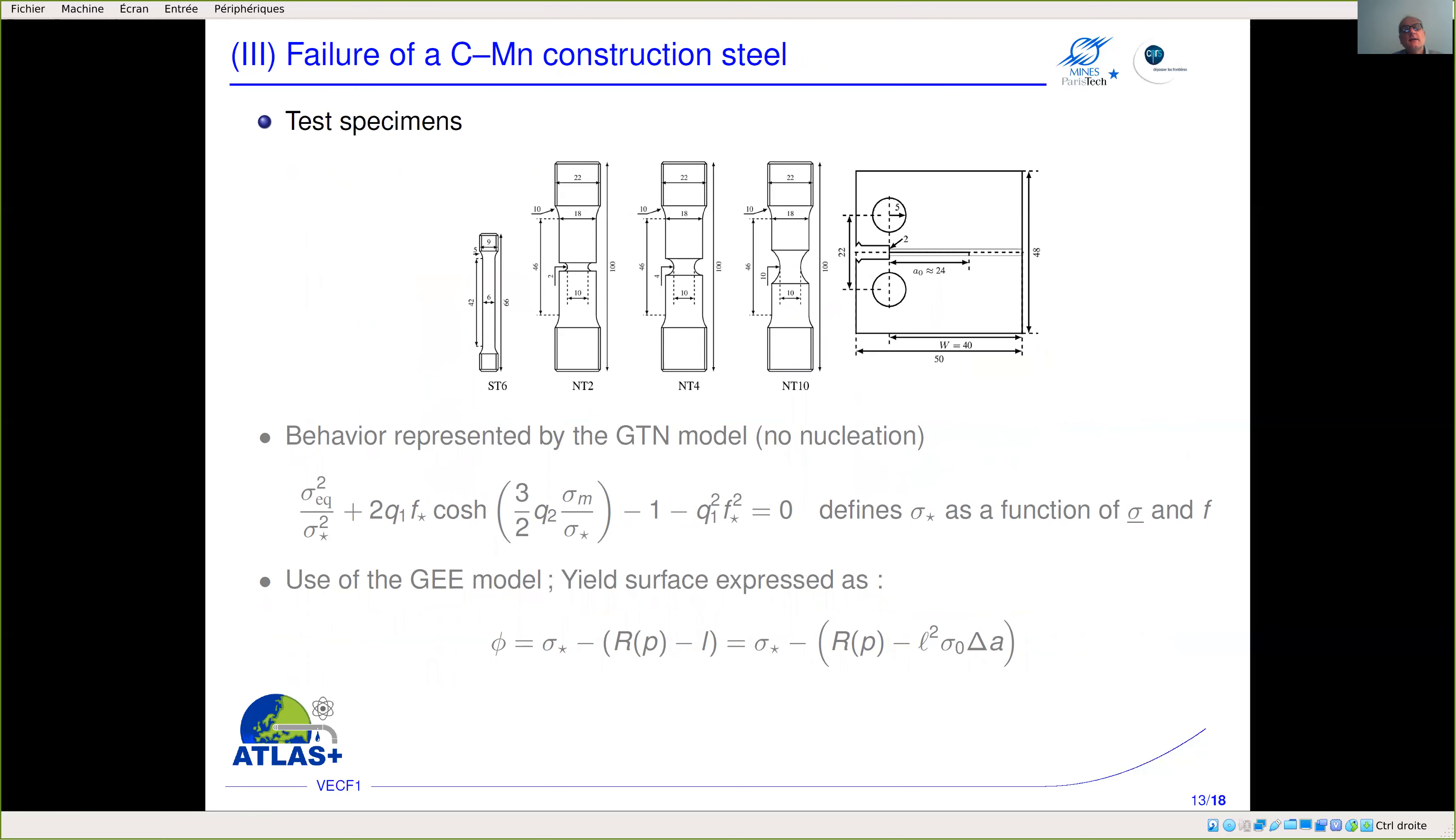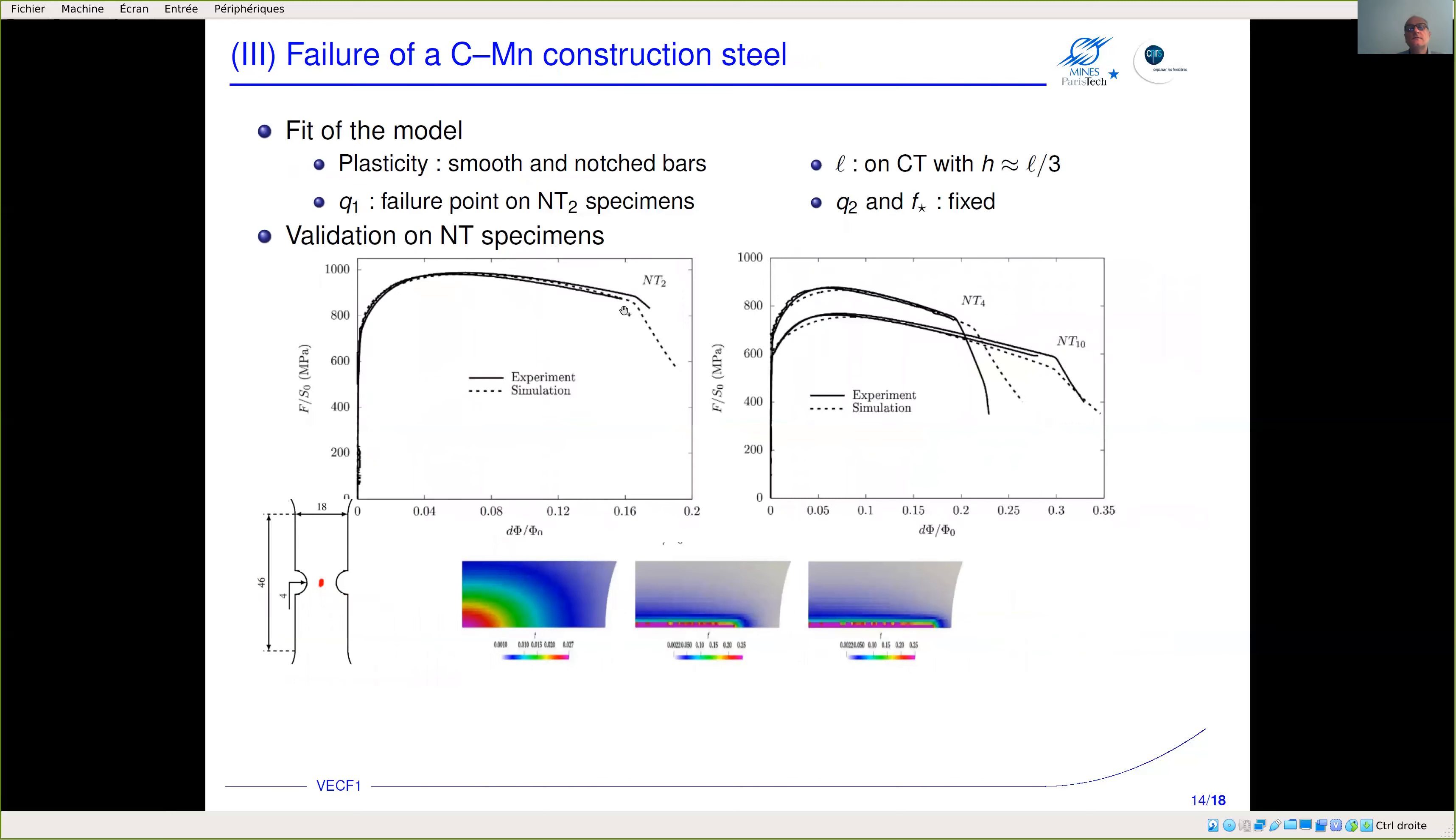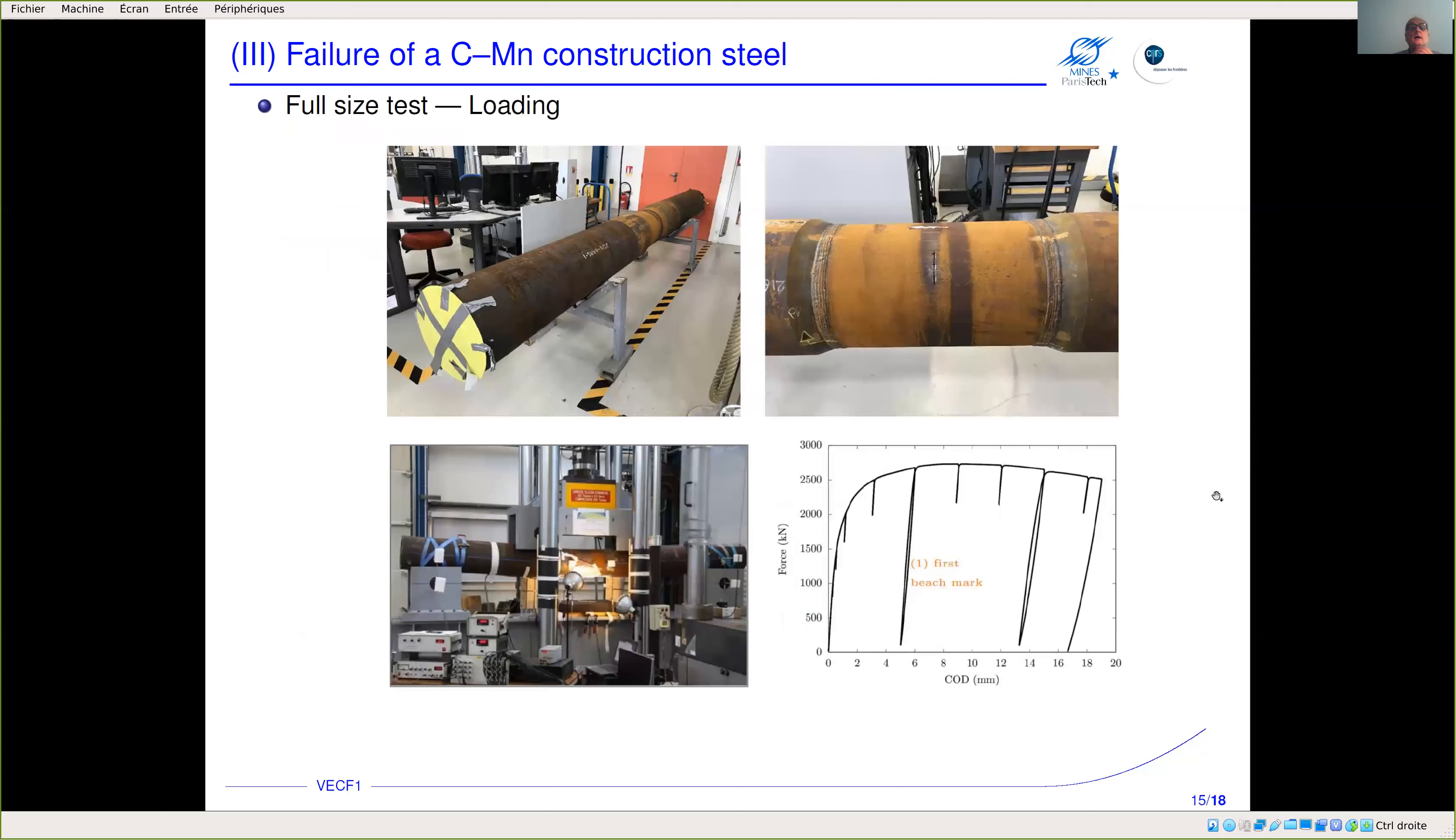Here is another example which in that case is applied to a real material—the carbon manganese steel. We did tests on tensile tests, some notch bars, and CT specimens. The model was fitted to represent notch bars but also the CT specimen. Here you have an example of damage going from the center of the specimen—that's the damage at crack initiation around here—and that's how damage develops within the minimum cross section of the specimen. What is interesting in this work is that we had access to tests on full-size specimens.